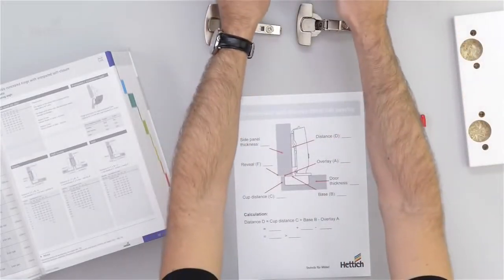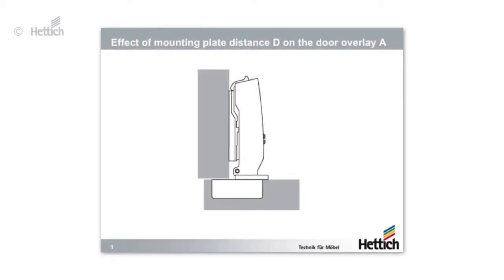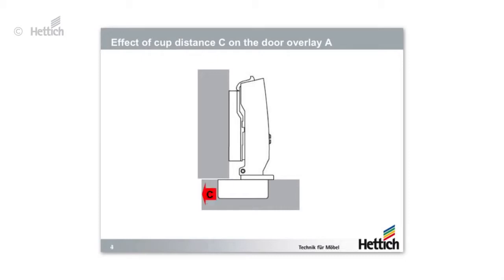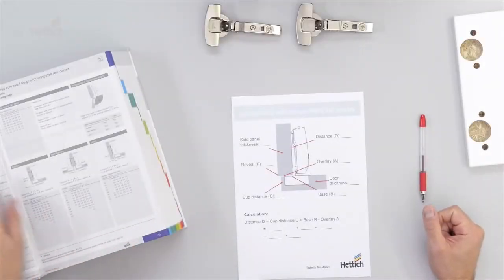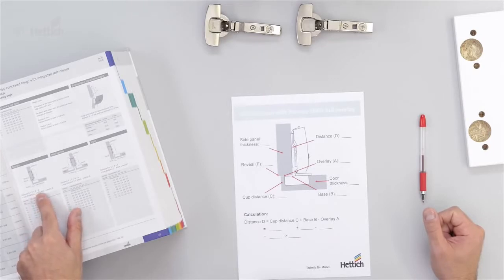The base B is what we need for calculating the mounting plate distance. By changing the distance D, we are also changing the overlay of the door, and the same applies if we are changing the cup distance C. The formula to calculate the mounting plate distance is shown on the opposite side: Distance D equals C plus B minus A.